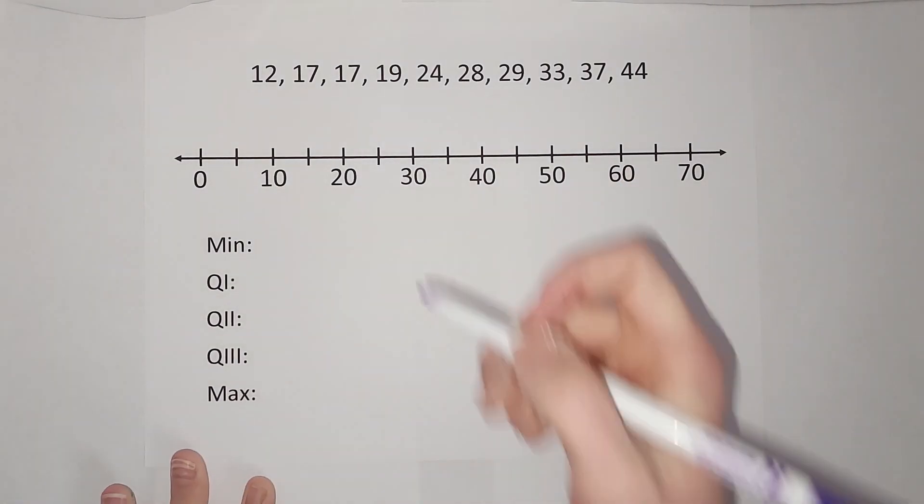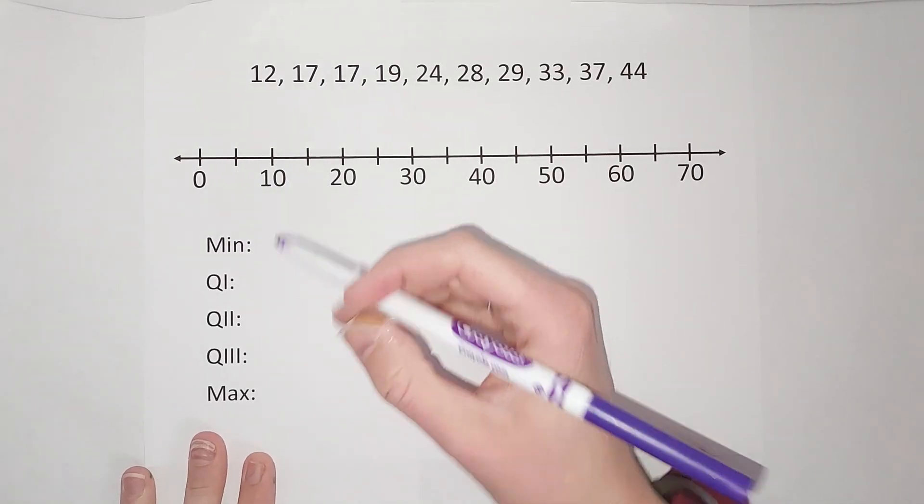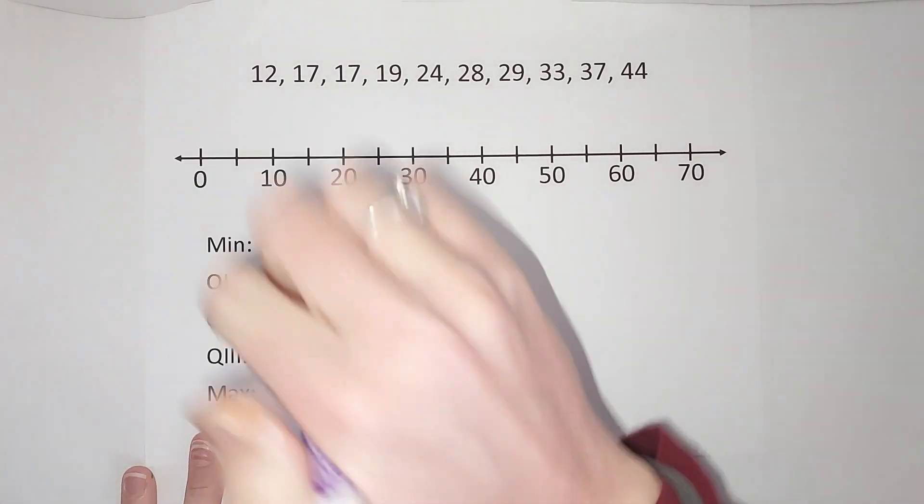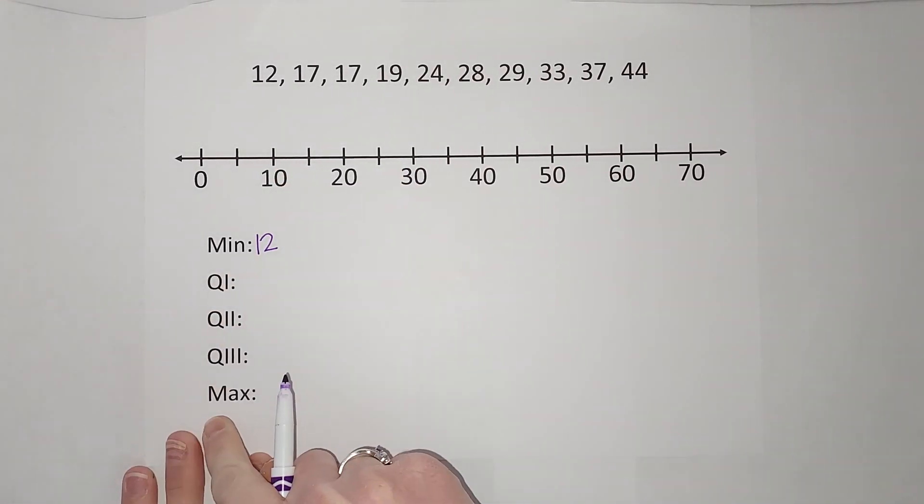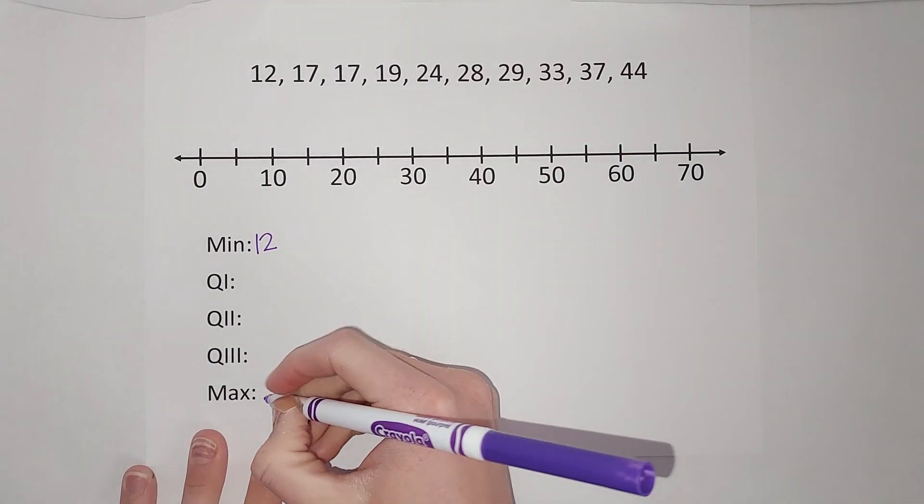My minimum, that is my smallest number, so that is 12. We'll do these in a second. My maximum number, that's my biggest number, is 44.